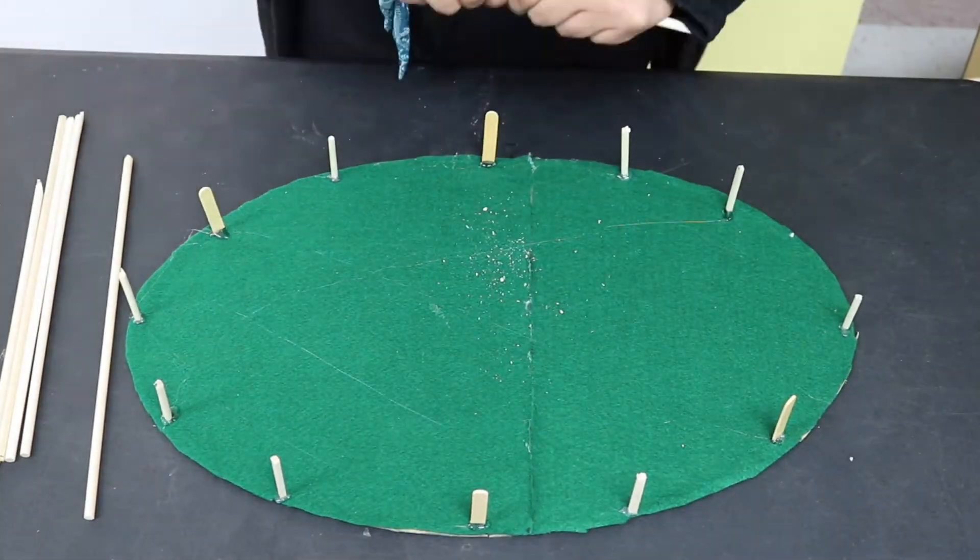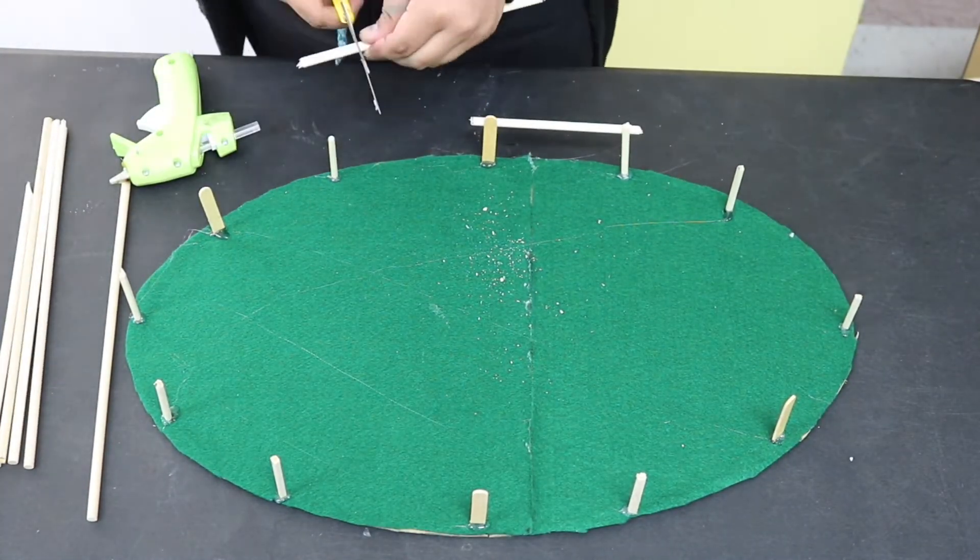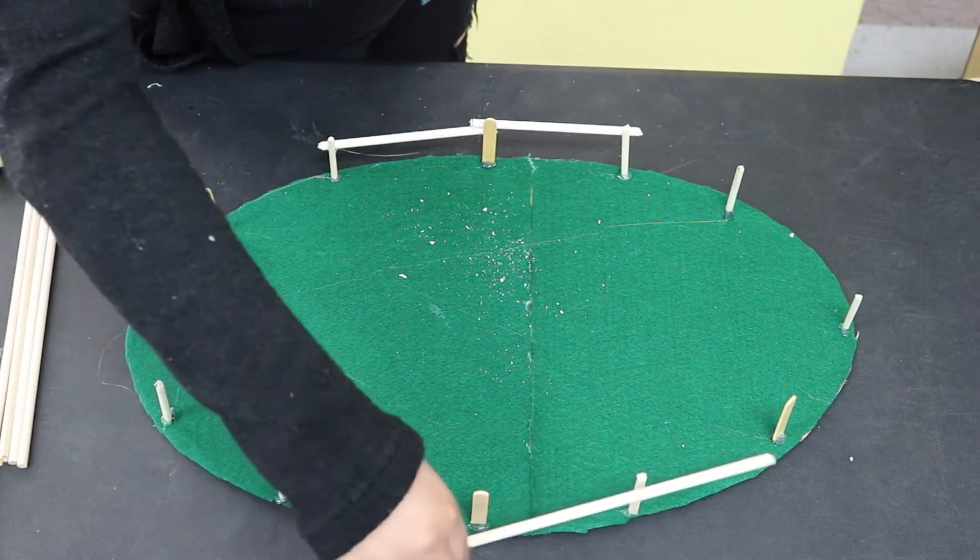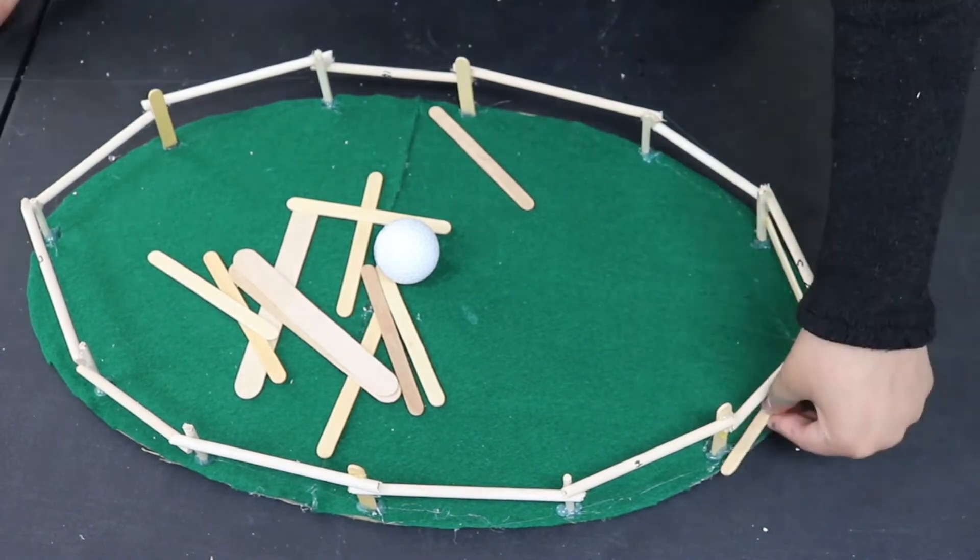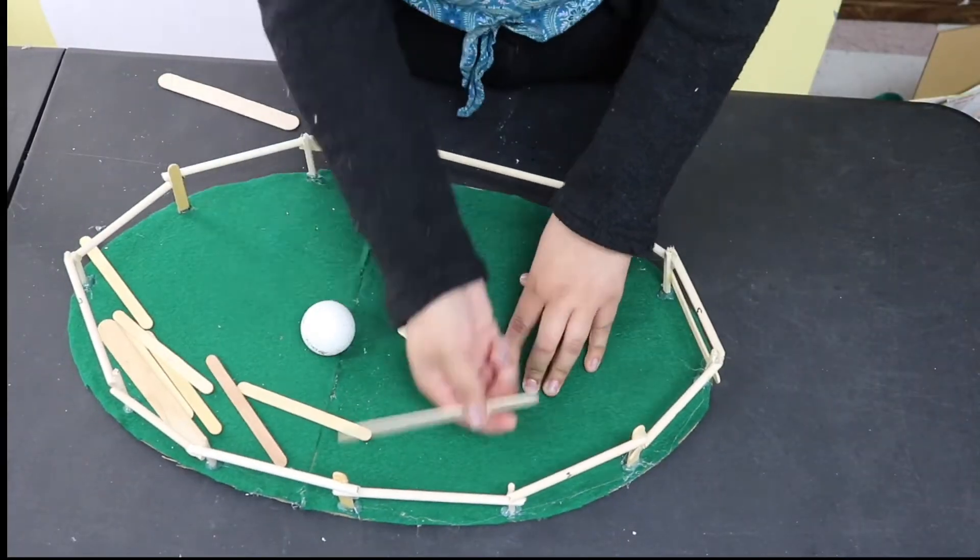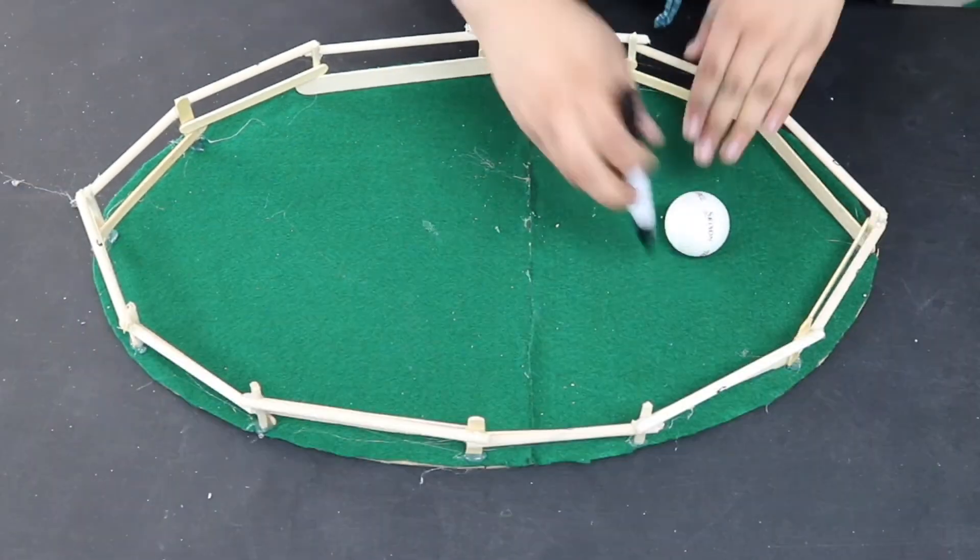To create the fence, I took popsicle sticks, chopsticks, whatever I had on hand, cut them to size and put them all the way around. I made two layers of this, one on the top and one on the bottom, to make sure the ball did not go out of bounds.